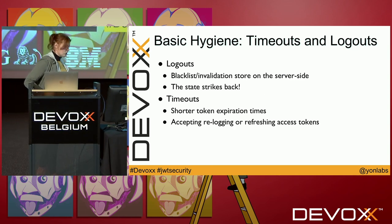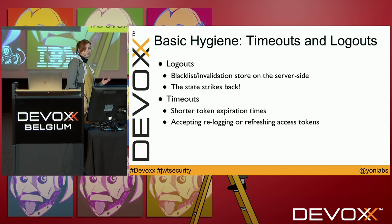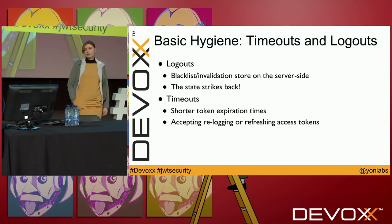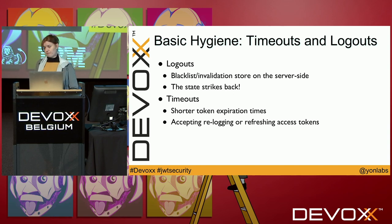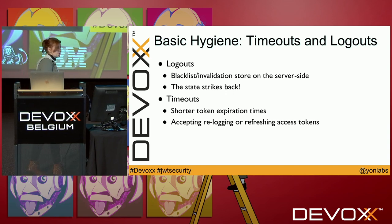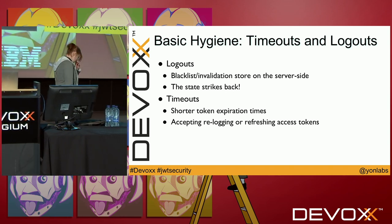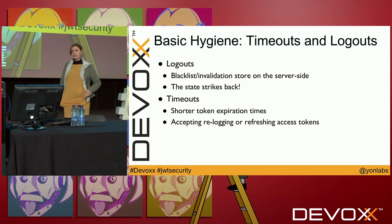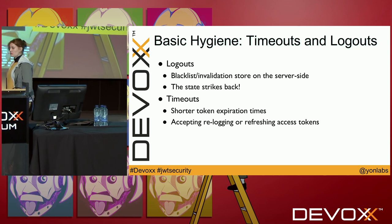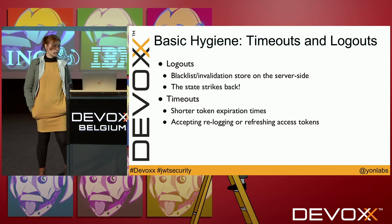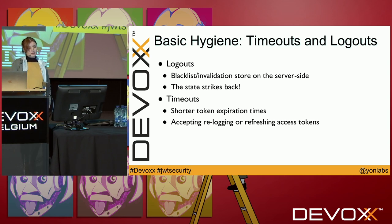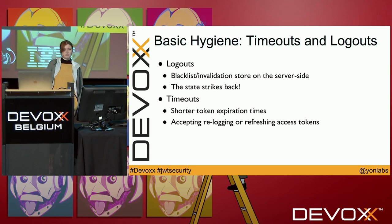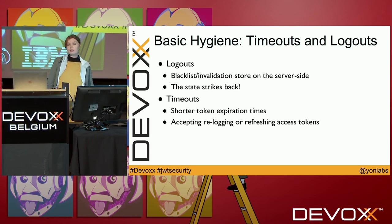So how to approach logouts? The state strikes back — we need state on the server-side. We need some sort of a store to hold invalidated tokens. There is no other way. We can use very short-lived access tokens and refresh tokens, but it's pretty complicated. The best approach is to just have state on the server-side. Unfortunately, it's not that easy with a stateless approach. We should definitely use shorter token expiration times, and we can accept re-logging or go for an approach with refreshing access tokens.